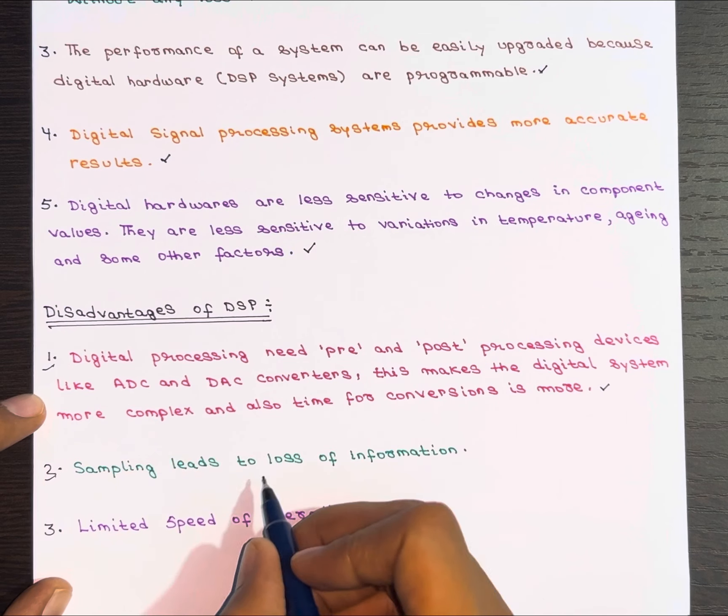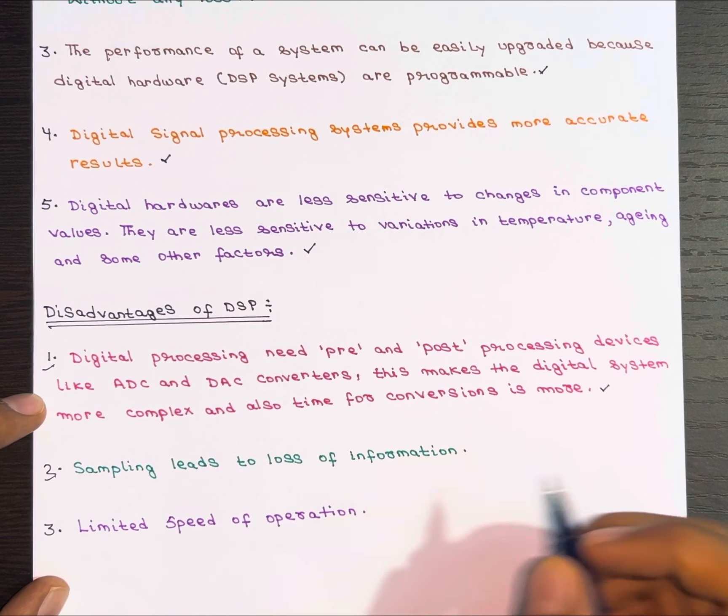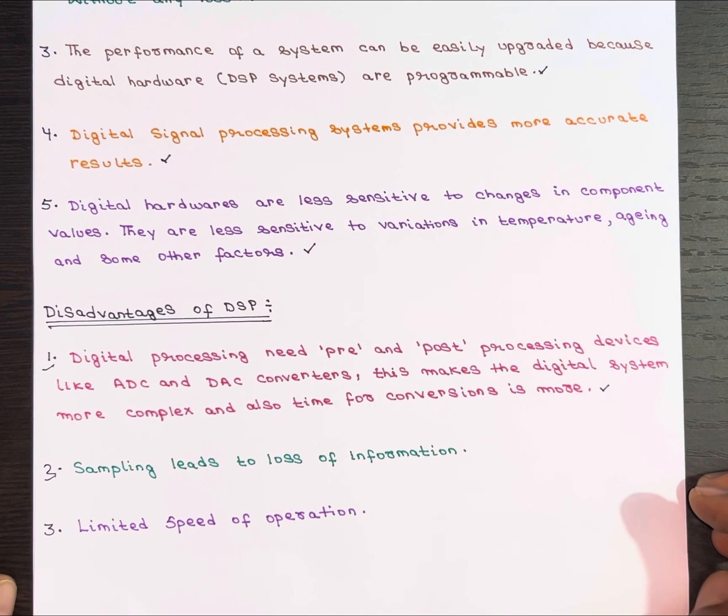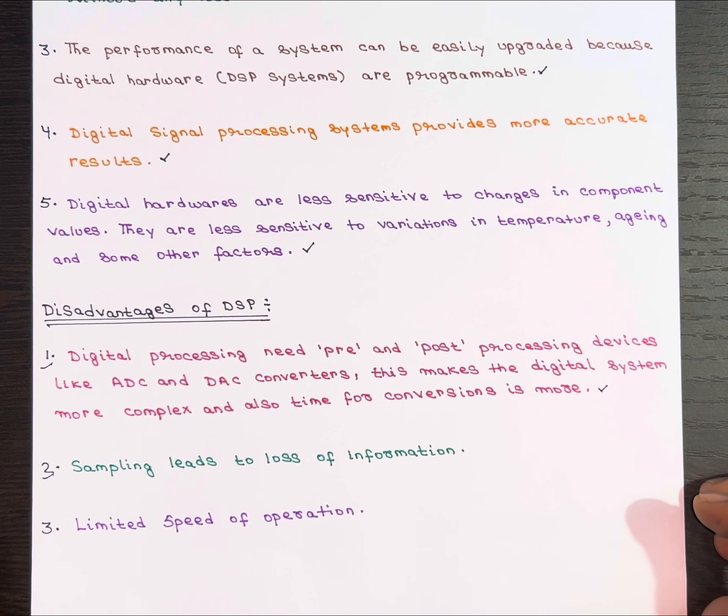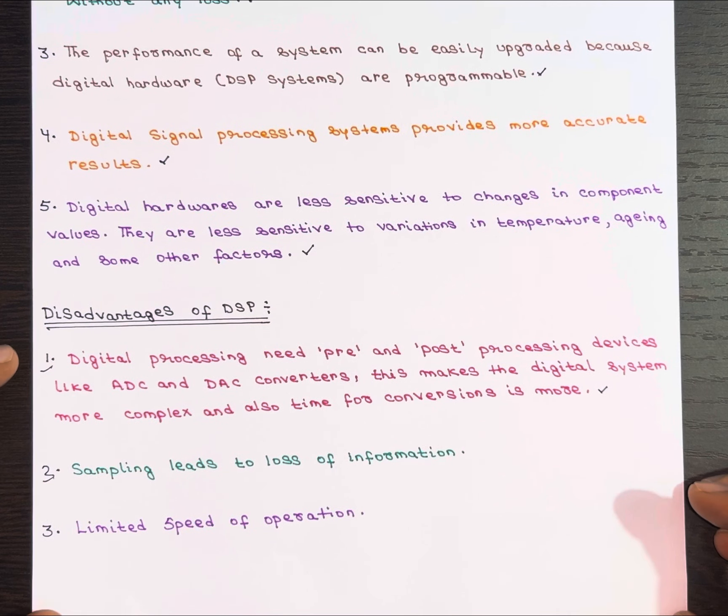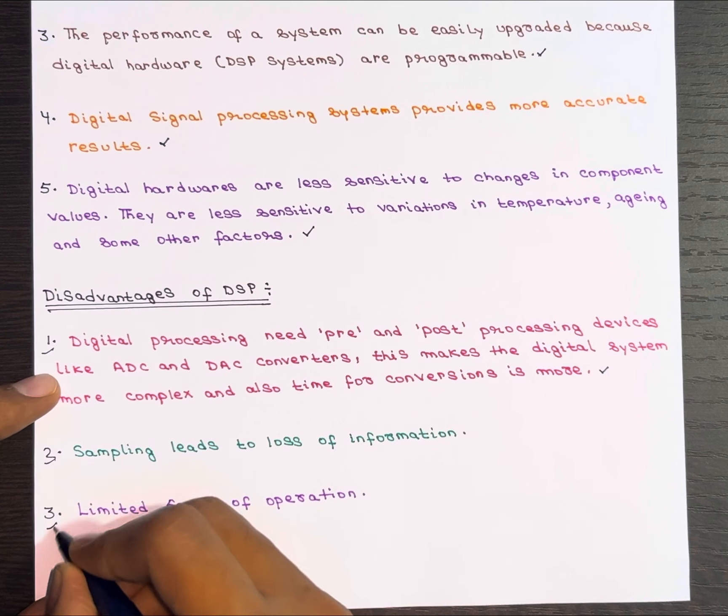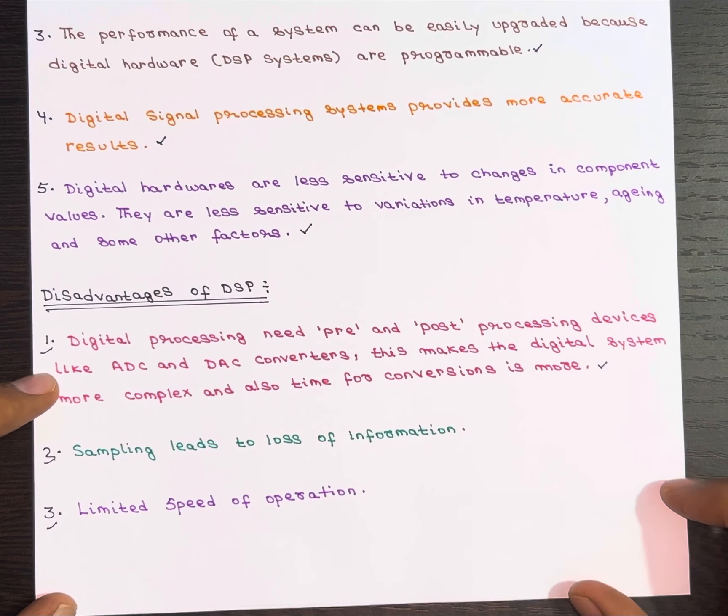Second, sampling leads to loss of information. Sampling, a key part of digital processing, can lead to a loss of information. It's something to keep in mind when working with DSP.